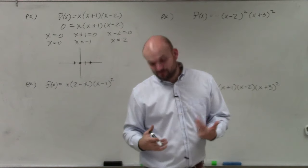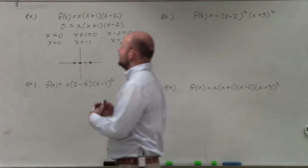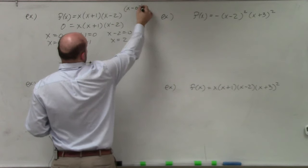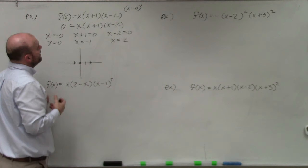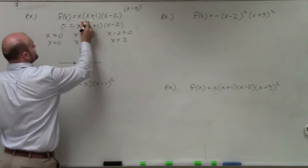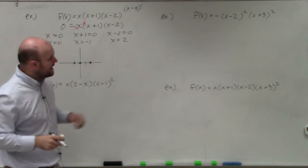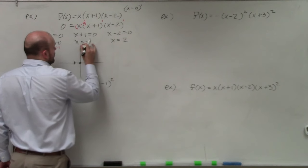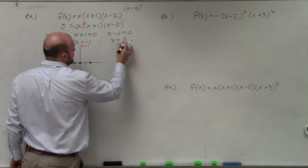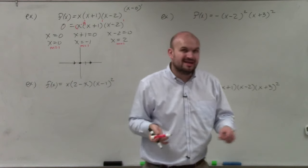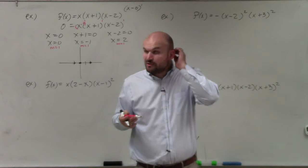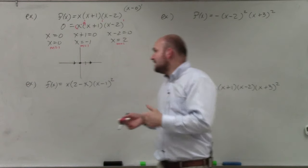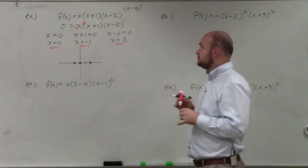The next thing we need to do is identify the multiplicity, which is the power of the factors. x is the same as (x minus 0) raised to the first power, and the other two factors are also raised to the first power — so the multiplicity equals 1. When the multiplicity is equal to 1, the graph crosses at the zeros. If the multiplicity is even, the graph is going to touch or bounce — it will rebound.